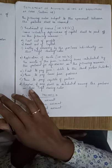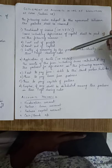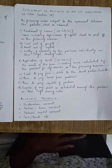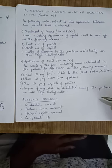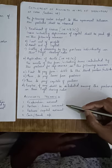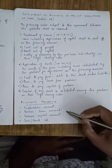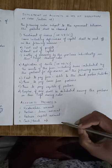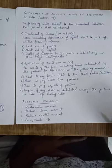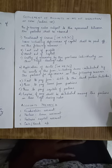We have now seen the meaning of dissolution, the modes of dissolution, and how settlement of accounts takes place. The accounts to be prepared under dissolution are: first, a Realisation Account; then, Partners' Loan Account; then, Partners' Capital Account; and finally, Cash or Bank Account to make payments and realise whatever is left over.